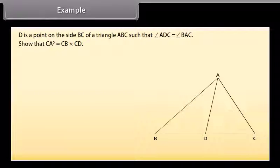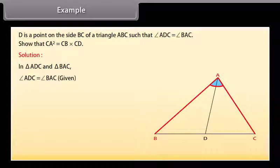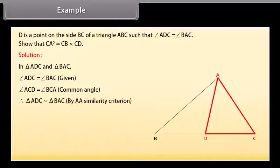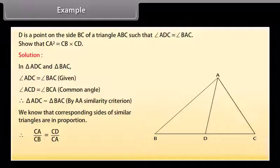Example: D is a point on side BC of triangle ABC such that angle ADC equals angle BAC. Show that CA² equals CB into CD. Solution: In triangles ADC and BAC, angle ADC equals angle BAC (given), and angle ACD equals angle BCA (common angle). Therefore, triangle ADC is similar to triangle BAC by AA similarity criterion. Since corresponding sides of similar triangles are in proportion, CA upon CB equals CD upon CA, which implies CA² equals CB into CD.